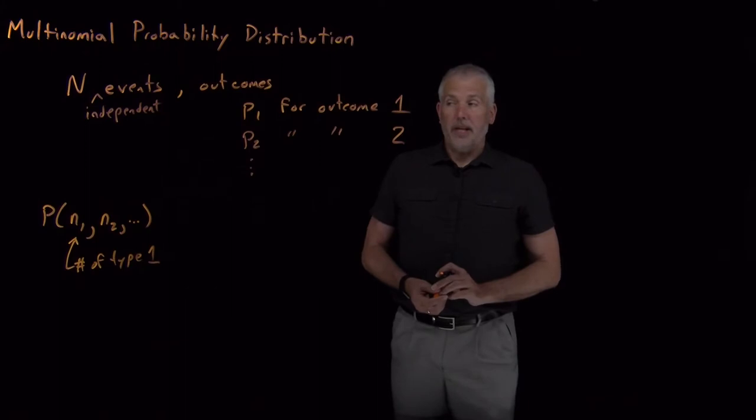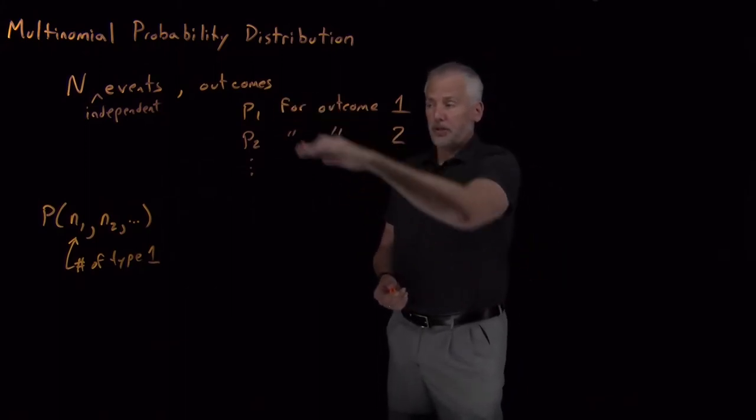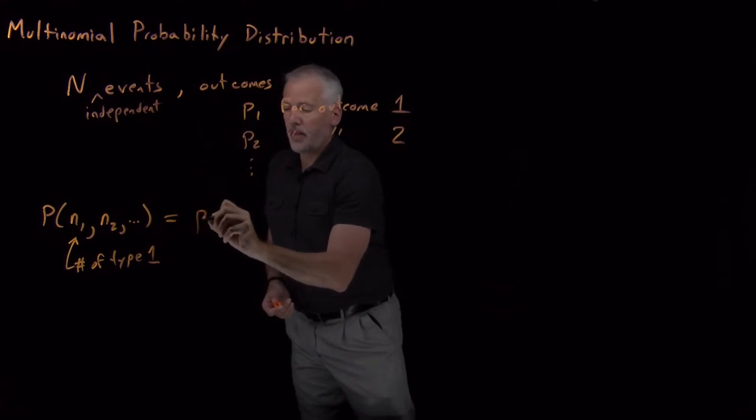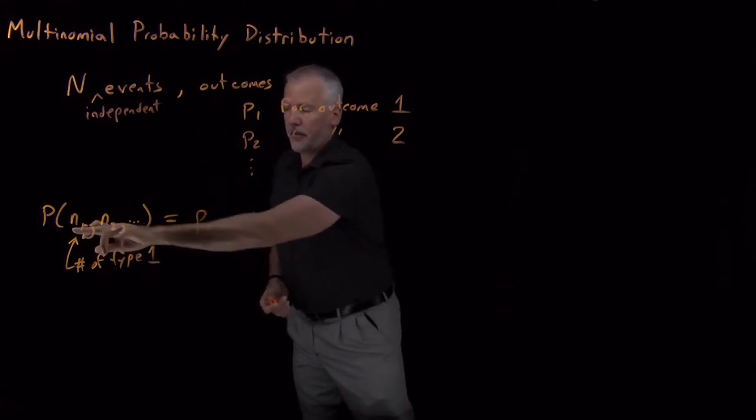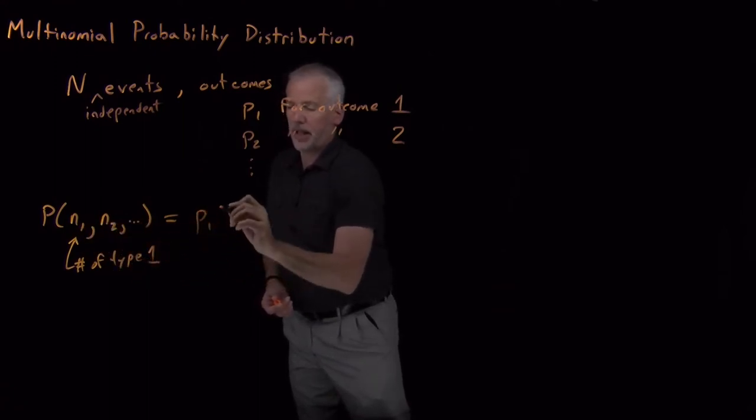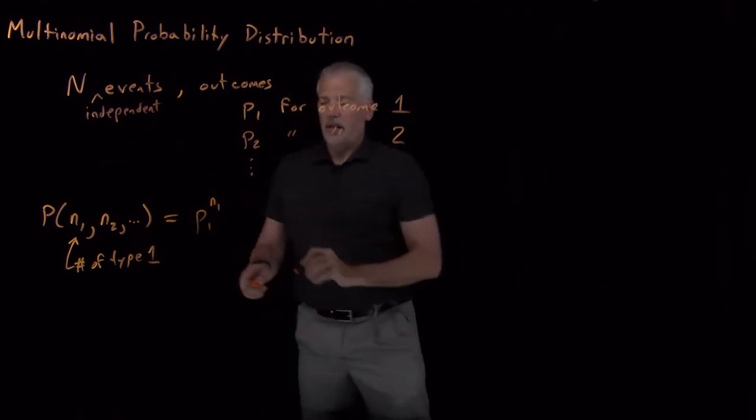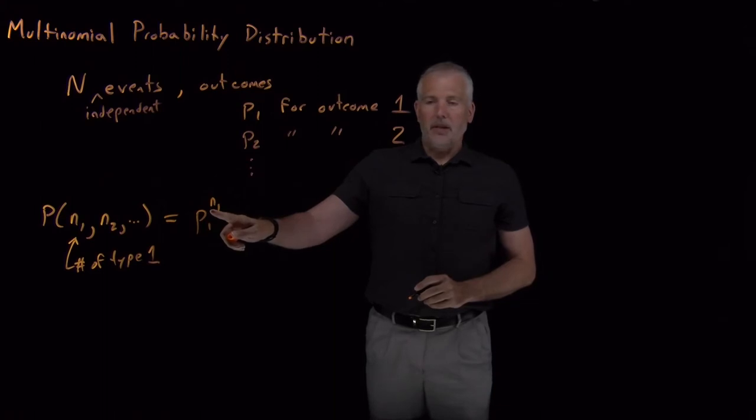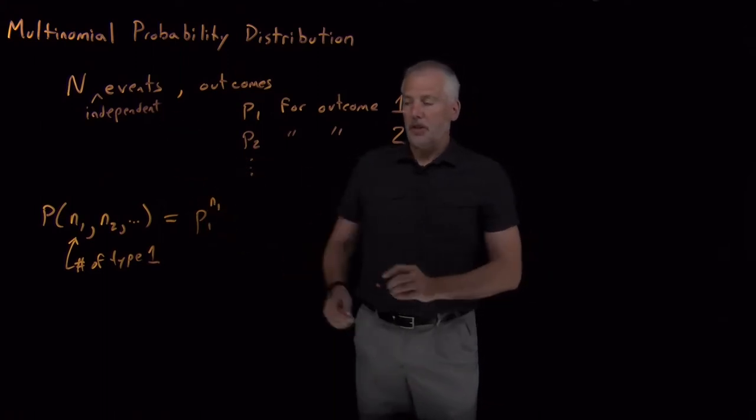So if this was our binomial distribution, if we only have two possibilities, then we already know how to write down the answer. That would be, if we want the first type of outcome to happen n1 times. Each time it happens, it happened with probability P1, multiply that together n1 times, because the events are independent.